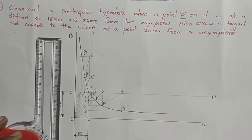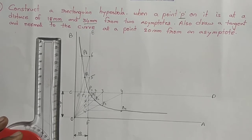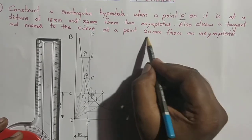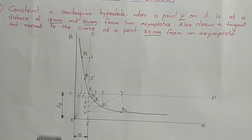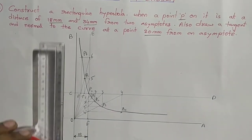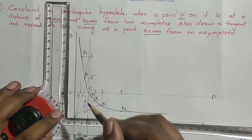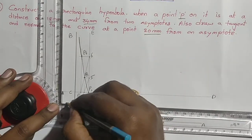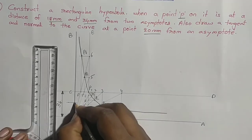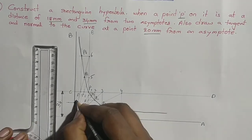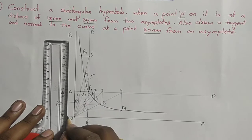After completion of drawing, we need to locate the tangent and normal. Draw the tangent and normal at a point 20mm from an asymptote. From O I'm marking 20mm from the x-axis. I got one point on OB; this point is G.